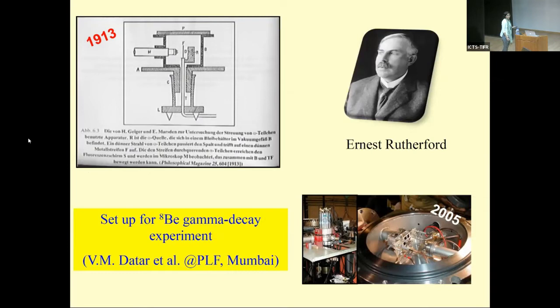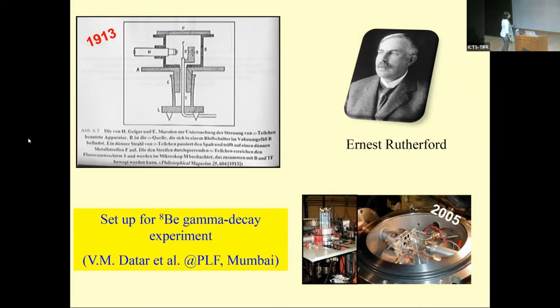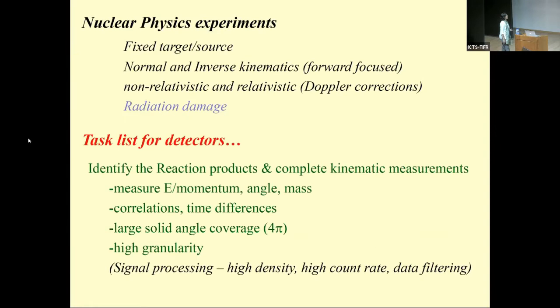For a brief historical review, one of the first classic experiments in nuclear physics was Rutherford's experiment to prove the structure of the atom. Looking back, the apparatus is rather simple — a clever experiment with a simple fluorescent screen, a passive detector. In about 100 years, we have progressed a lot, and even low-energy nuclear physics experiments now have many, many detectors.